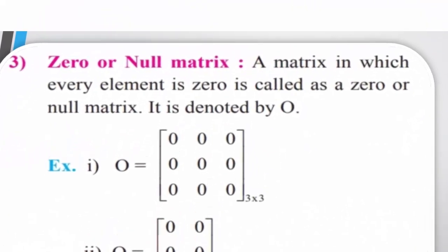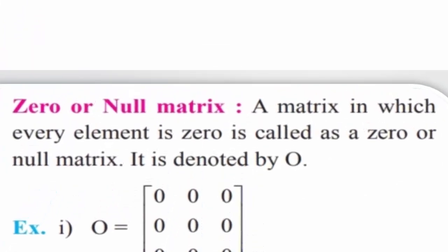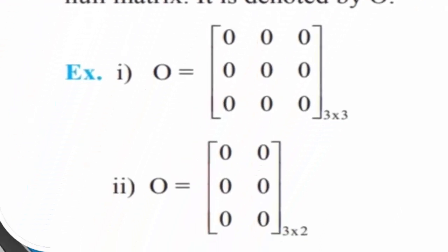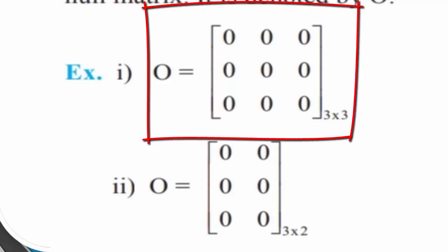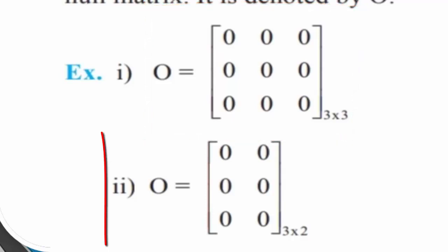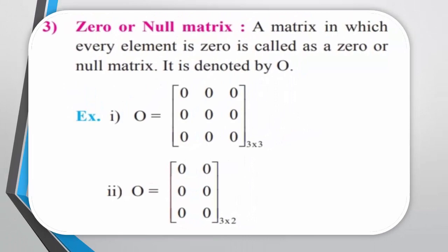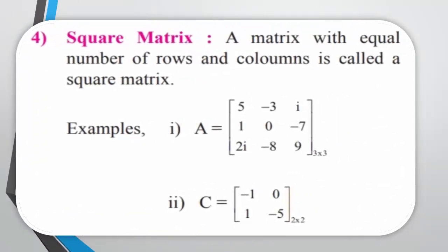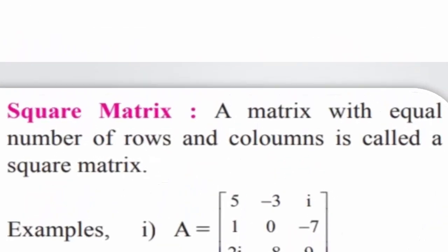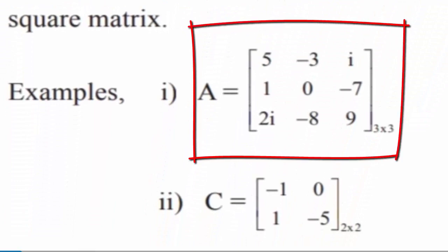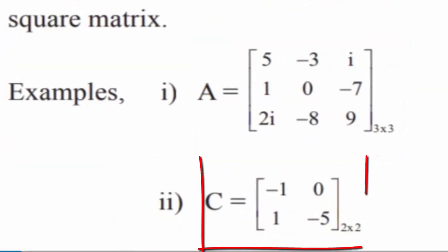Zero or null matrix: A matrix in which every element is 0 is called a zero matrix or null matrix. It is denoted by O. For example, O is a 3 by 3 matrix where all elements are 0, and another example is O, a 3 by 2 matrix where all elements are 0. Square matrix: A matrix with equal number of rows and columns is called a square matrix. For example, A is a 3 by 3 matrix with 3 rows and 3 columns, and C is a 2 by 2 matrix with 2 rows and 2 columns.